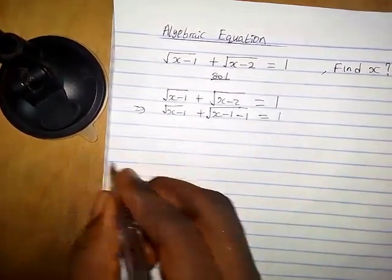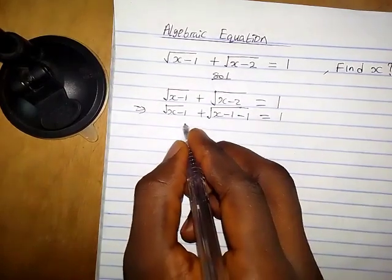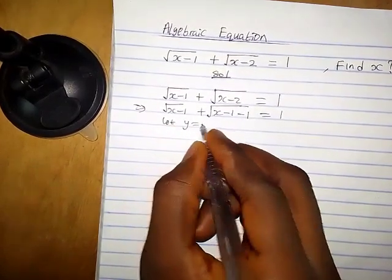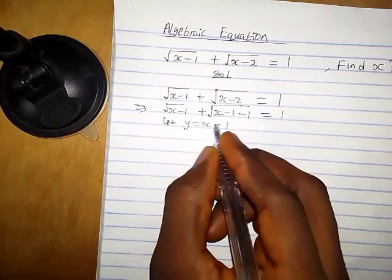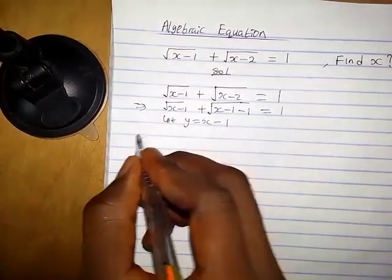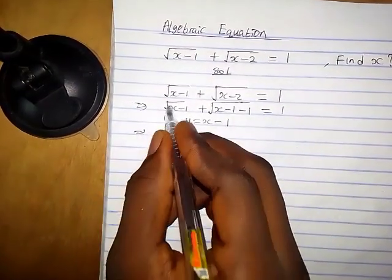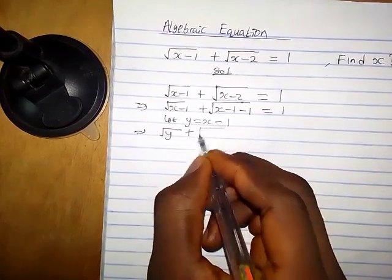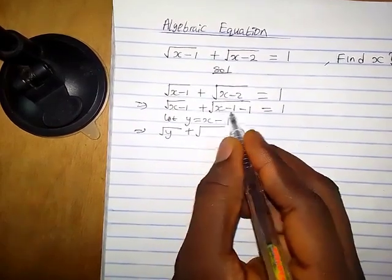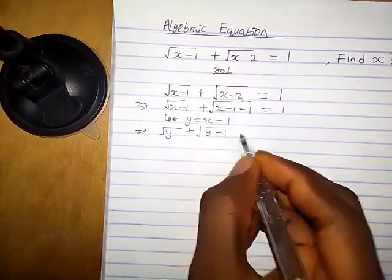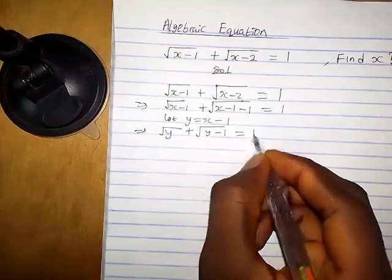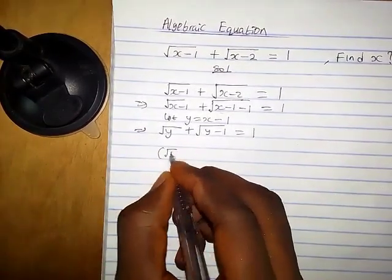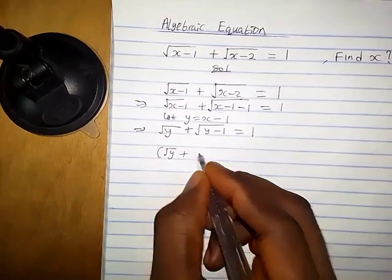Now let's suppose y equals x minus one. So in place of x minus one, we replace it with y. We then have square root of y plus square root of y minus one equals one. Now let's square both sides.